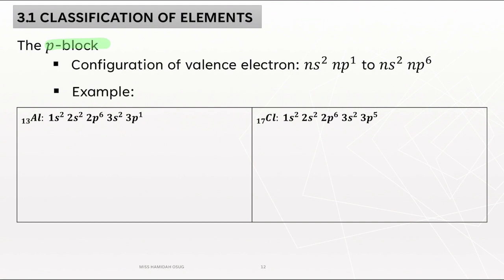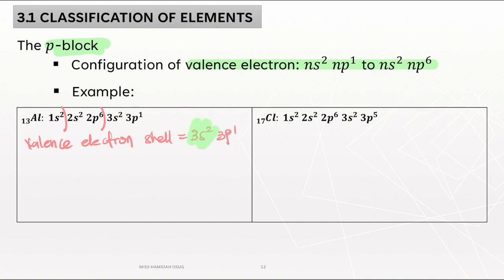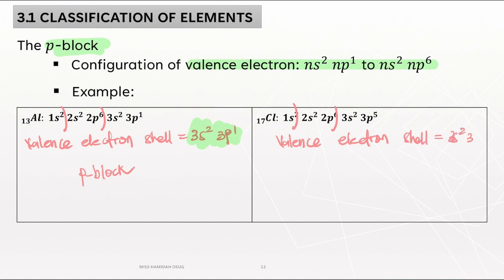Now let's look at the P block, where the configuration of the valence electron is NS2 and P1 to NS2 and P6. For aluminium 13, we draw the border and find the valence electron shell is 3S2, 3P1 — so aluminium belongs to the P block. For chlorine 17, the valence electron shell is 3S2, 3P5, so chlorine also belongs to the P block.